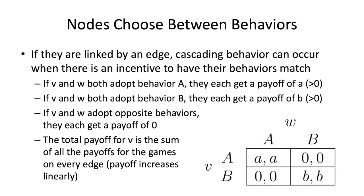I've put in a game matrix here — what we're calling a coordination game — where W and V need to get their behaviors to match. If they both do A, they both get reward A. If they both do B, they get reward B, and if they do something different, they get reward zero. One of the exercises in the book notes there's an intrinsic reward to doing either A or B, where A and B represent the respective differences in payoff.